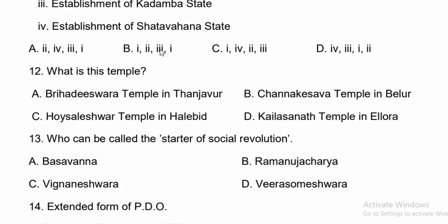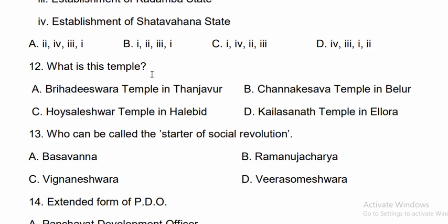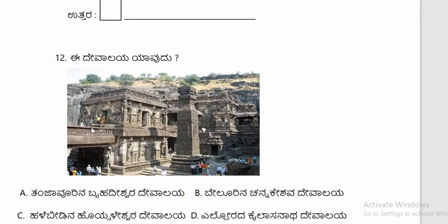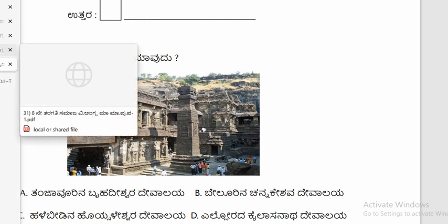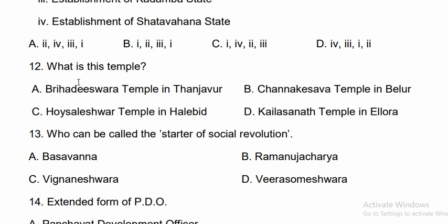Question twelve: Identify this temple from the image given. The options are Thanjavur Brihadeshwara temple, Belur Chennakeshwara temple, Halebidu Hoysaleshwara temple, and Yeldur Kailasanatha temple. The correct answer is the Kailasanatha temple of Yeldur.